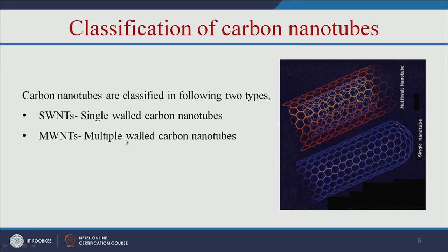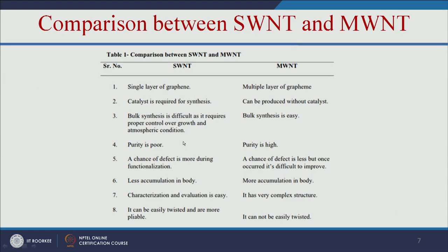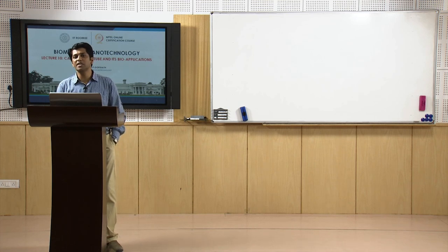Single wall carbon nanotubes consist of a single layer of graphene, while multi-wall carbon nanotubes have multiple layers. For synthesis, single wall nanotubes need a catalyst, while multi-wall nanotubes can be produced without one. Bulk synthesis is difficult for single wall but easy for multi-wall; purity is poor for single wall but high for multi-wall. Importantly, single wall nanotubes accumulate less in the body, while multi-wall nanotubes accumulate more.